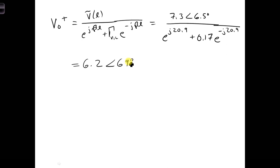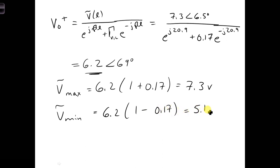Now we can determine the voltage maximum and minimum occurring along the line. The max is V naught plus magnitude, which is 6.2, times 1 plus the amplitude of our reflection coefficient, so that will equal 7.3 volts. The minimum voltage will be 6.2 again, times 1 minus 0.17, which is equal to 5.1 volts. We've succeeded in calculating the maximum and minimum voltages occurring along the transmission line.